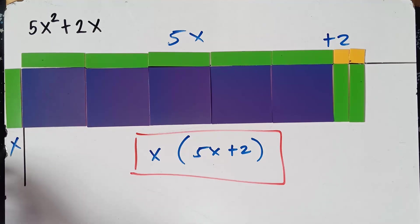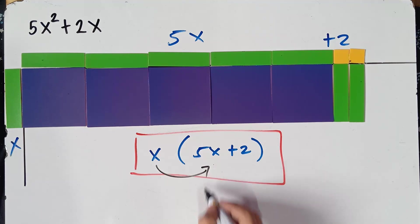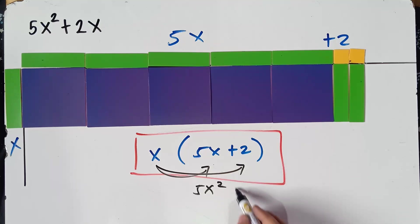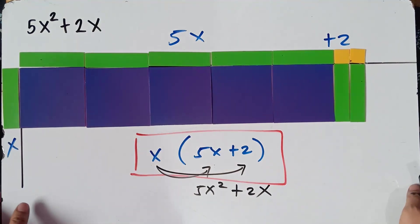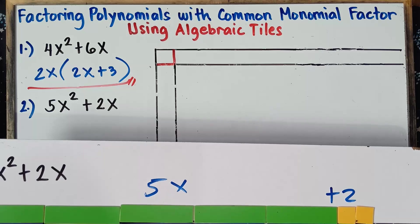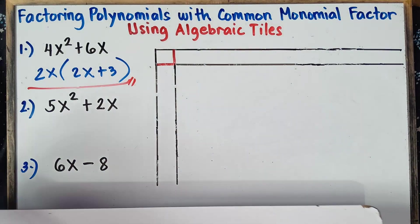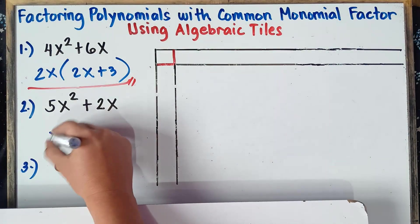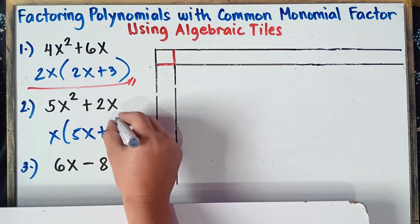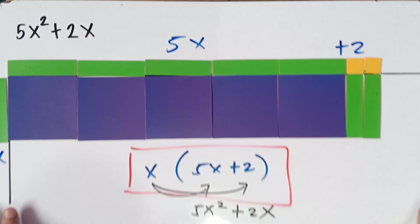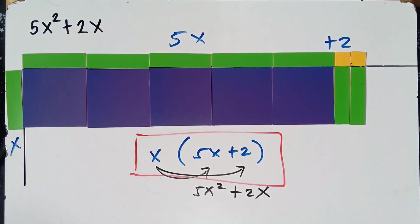We can check using the distributive property: x times 5x gives 5x squared, and x times positive 2 gives positive 2x — the same as our original expression. So the answer for example number 2 is x times the quantity 5x plus 2.